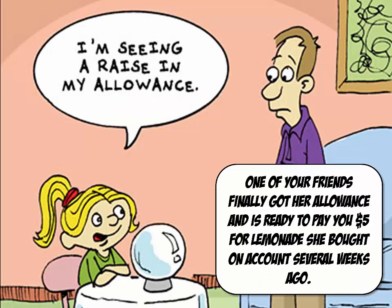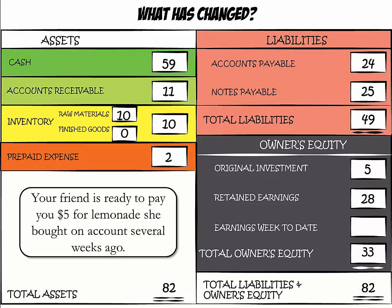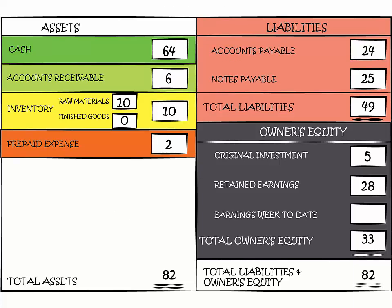One of your friends got her allowance and is ready to pay you $5 for a lemonade she bought on account several weeks ago. To reflect this change, we added $5 in cash and reduced accounts receivable by $5. Total assets remain the same at $82.